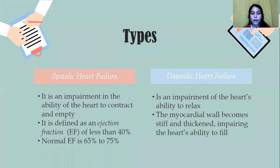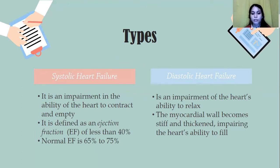There are two types of congestive heart failure: systolic heart failure and diastolic heart failure. Systolic heart failure is an impairment in the ability of the heart to contract and empty, and it has an ejection fraction of less than 40%. Ejection fraction is a percentage of blood ejected with each contraction, and the normal ejection fraction is 65 to 75%.